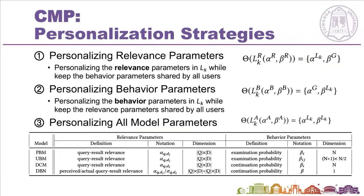As shown in the table, we divide the parameters of click models into relevance parameters and behavior parameters. We design three different personalization strategies to aggregate the parameters of local models and the global model: we personalize the relevance parameters, behavior parameters, and all parameters respectively.